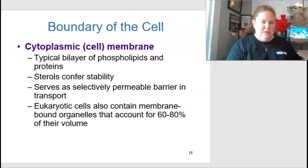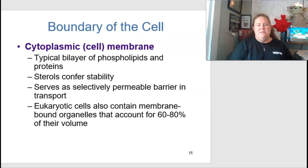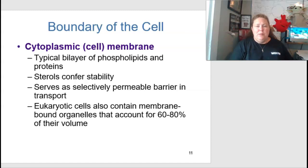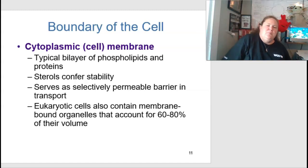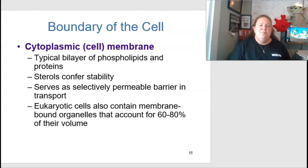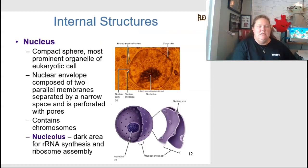Algae cell walls are variable in chemical composition; substances commonly found include cellulose, pectin, tannins, silicon dioxide, and calcium carbonate. The cytoplasmic cell membrane is a typical bilayer of phospholipids and proteins — two layers of phospholipids making up the membrane. Sterols, specifically cholesterol, help with stability and flexibility, preventing the cell from shattering. These serve as selectively permeable barriers for transport.